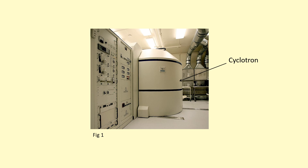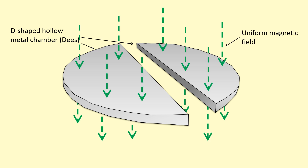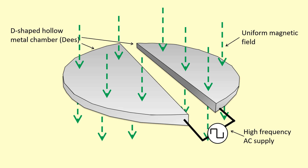This image shows the cyclotron — a particle accelerator which is used in hospitals and by physicists to accelerate protons to a very high velocity near the speed of light. Inside the cyclotron we have two D-shaped hollow metal chambers, also called D's, and a strong magnetic field going through them. This strong magnetic field can be produced by electromagnets above and below the D's.